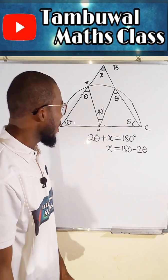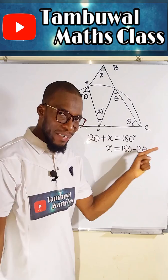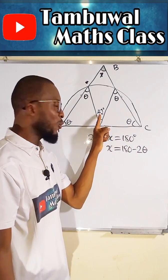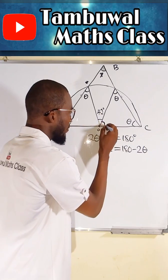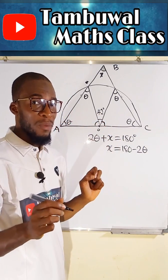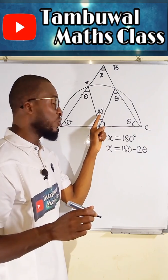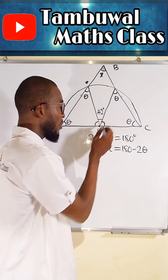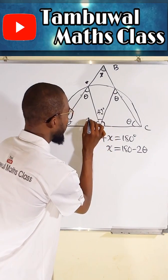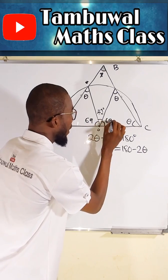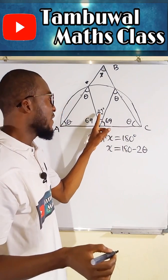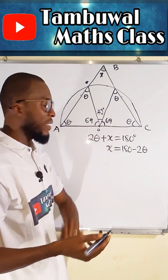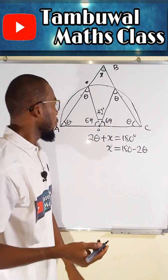Angles on a straight line sum to 180 degrees. We already have 42 degrees, and these two angles are exactly the same, so we subtract 42 from 180 and divide by 2 to get each of these two equal angles. They must be 69 degrees each, because 180 minus 42 is 138, and 138 divided by 2 is 69.